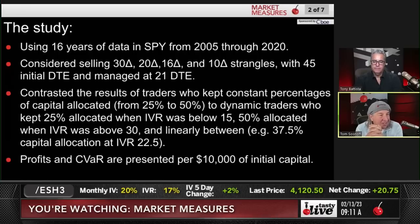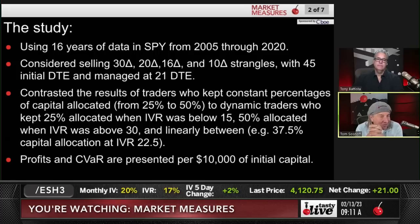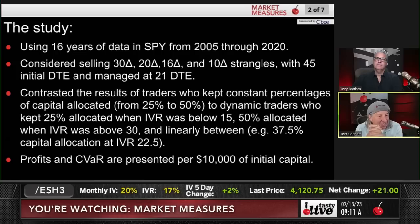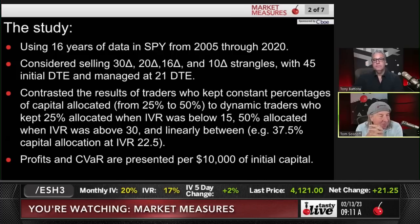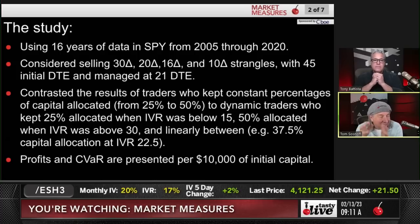So we used 16 years' worth of data. We considered selling the 30, 20, 16, and 10 delta strangles at 45 days to expiration, managed at 21 days. We contrasted the results of traders who kept constant percentages of capital allocated — from 25 to 50 — to dynamic traders who kept 25% allocated when IVR was below 15 and 50% allocated when IVR was above 30. Profits and conditional value at risk are presented per $10,000 of initial capital.